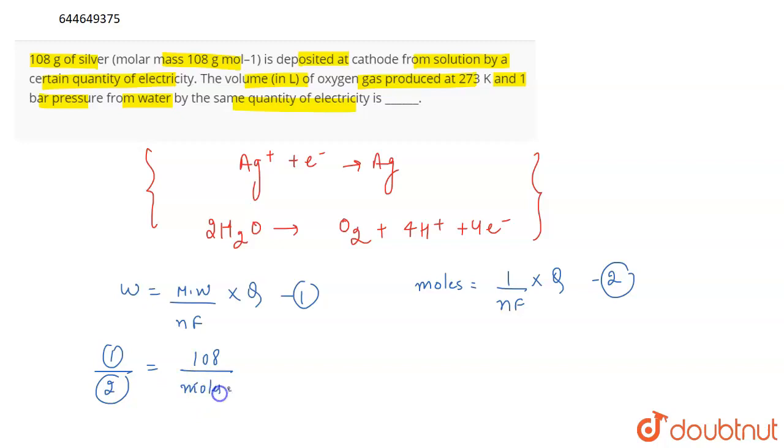This will be the moles of O2. So, to calculate the moles of O2, we will be using this formula 1 upon NF into Q and this W is the weight of silver deposited. This will be equal to the molecular weight of silver is 108 into Q divided by NF.